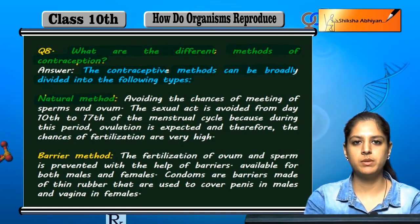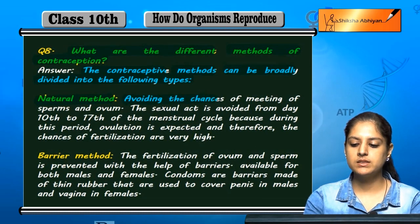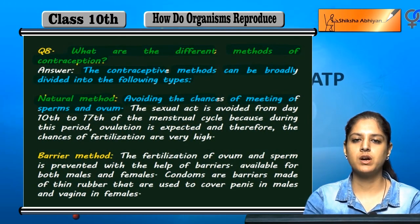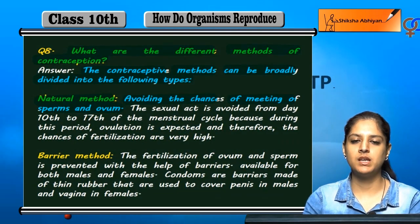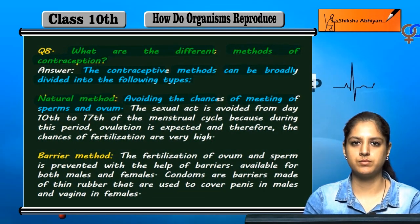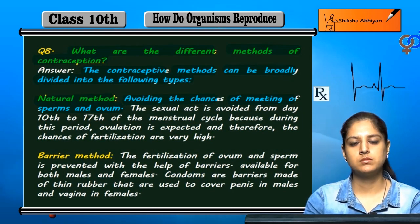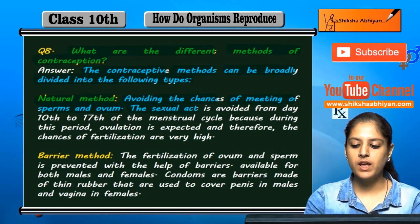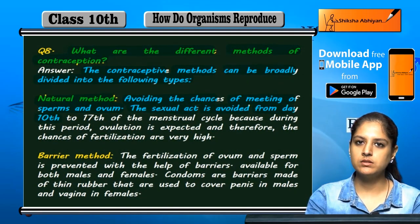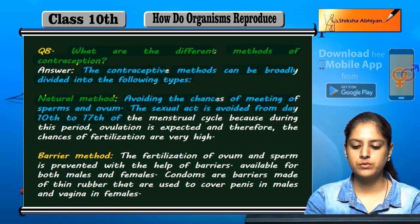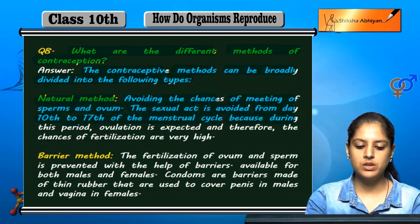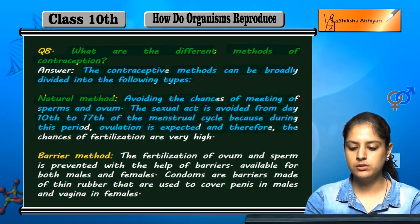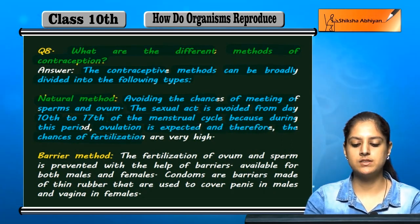First, the natural method. We naturally avoid the chances of meeting of sperm and ovum. If we avoid the meeting of sperm and ovum, we stop fertilization naturally. The sexual act is avoided from day 10 to 17 of the menstrual cycle, because during this period ovulation is expected and therefore the chances of fertilization are very high.